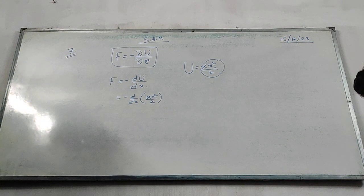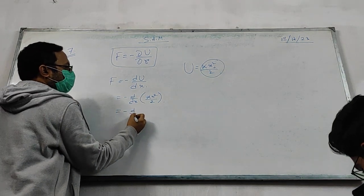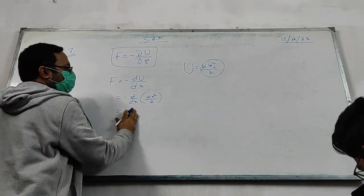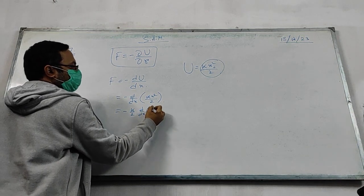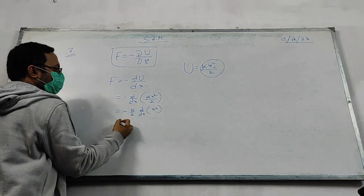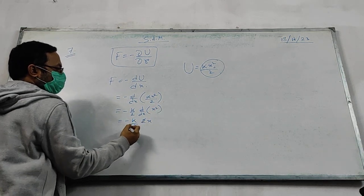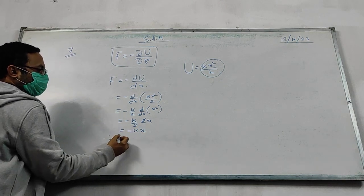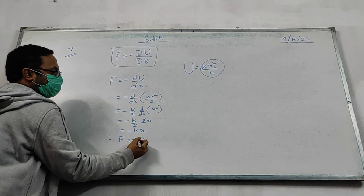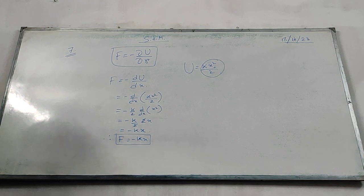dU by dx of kx square by 2. Now, that is dU by dx of k by 2 is constant. So dU by dx of kx square by 2, 2 x square by 2, x square by 2. So we get F is equal to minus kx. So F is equal to minus kx.